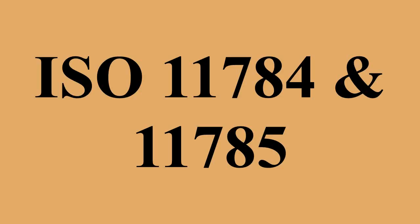ISO 11784 and ISO 11785 are international standards that regulate the radio frequency identification of animals, which is usually accomplished by implanting, introducing, or attaching a transponder containing a microchip to an animal. RF identification of animals requires that the bits transmitted by a transponder are interpretable by a transceiver. Usually the bit stream contains data bits defining the identification code and a number of bits to ensure correct reception of the data bits. ISO 11784 specifies the structure of the identification code.